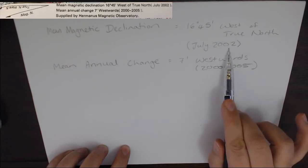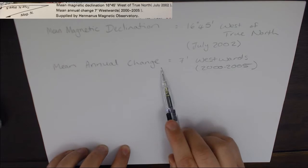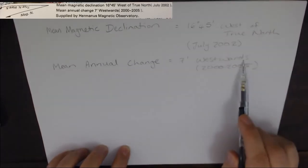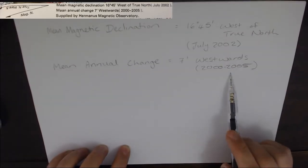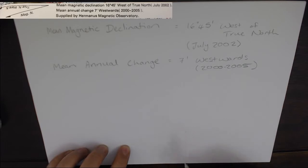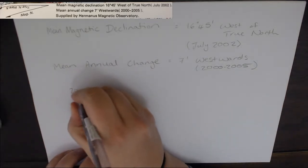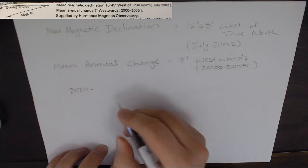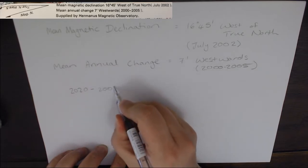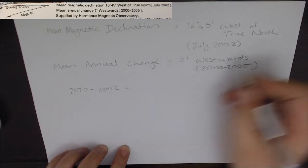It's also showing us our change, so the declination is west of true north at 16 degrees 45 minutes, calculated in 2002. Our change is going to be 7 minutes westward every year. We're going to have to add that all together. The first thing we need to find is our difference, so 2020 being this year.